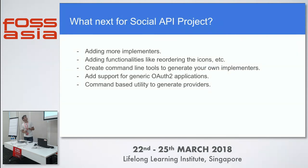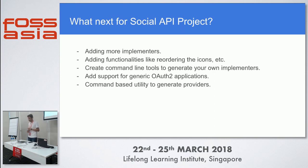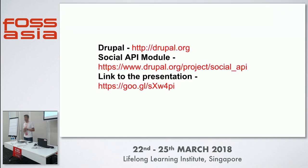For what's next in our project: one major task is adding more implementers — for every social network that supports OAuth2, we want to add it to our list. We're also adding functionality like reordering social network icons in our block, creating a command-line tool to create your own implementer in about five minutes, and adding support for generic OAuth2 applications. Links to the project are available if you want to explore or create your own Drupal website with this functionality.